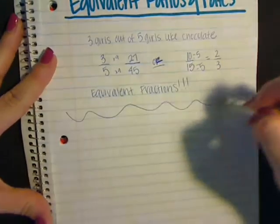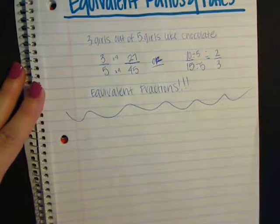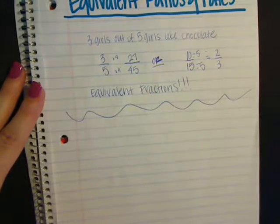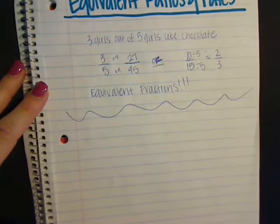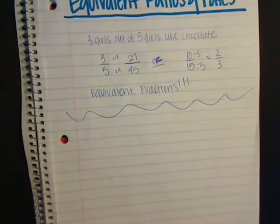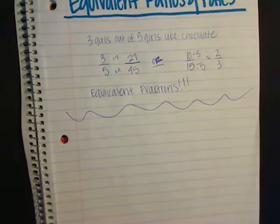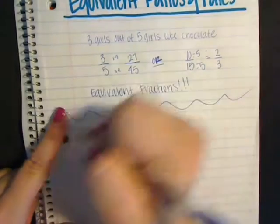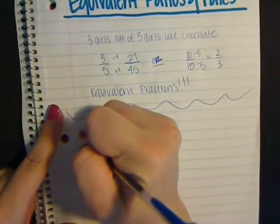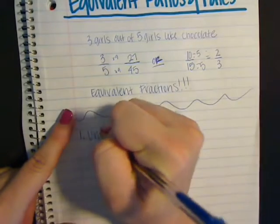The next thing we're going to talk about is: if I gave you two rates or ratios, how would you figure out if they're equivalent? There are three ways we can do that. The first way is by using the unit rate.